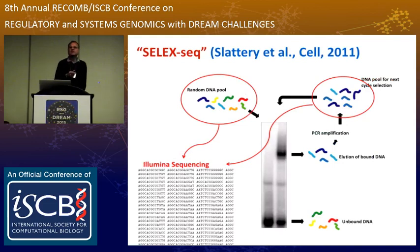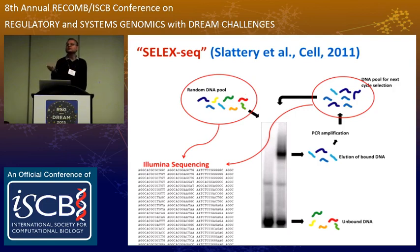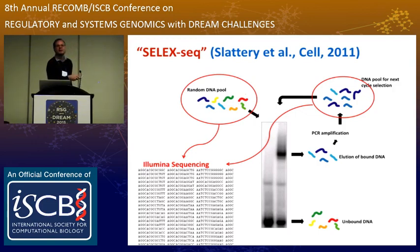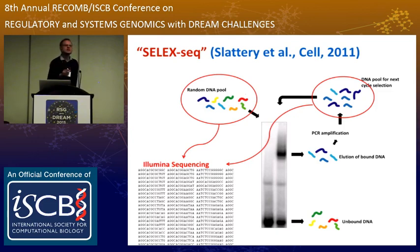In my lab, we've spent a lot of time in recent years on SELEX-Seq analysis. This is a technology similar to high-throughput SELEX, but we do it in an EMSA gel so we can look at specific complexes. This was done in collaboration with Richard Mann at Columbia, Remo Rose, who's here, and Barry Honig a couple of years ago. We've been building on this computationally and experimentally in different ways, and it's just starting to give the first results. There are also a few posters from my lab that will tell you a little more about it.